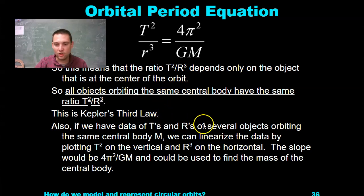Also, if we have the data of T's and R's of several objects orbiting the same central body, we can linearize the data by plotting T² on the vertical and R³ on the horizontal. We've done this a bunch with all of our linearization practices. If you have not yet grasped linearization at this point in the year, do it. Go back to a previous section. Perhaps I'll put this on the website so you can have it.